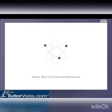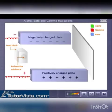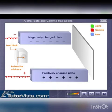Alpha, Beta and Gamma Radiations. Certain elements exhibit spontaneous emissions of radiations. Such substances are called radioactive substances.